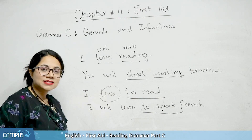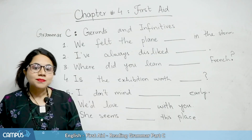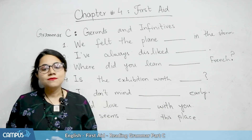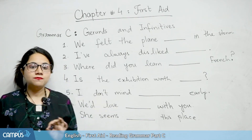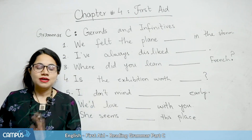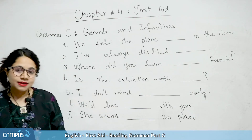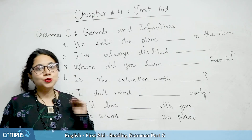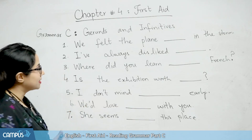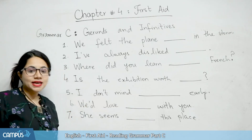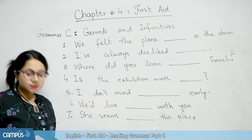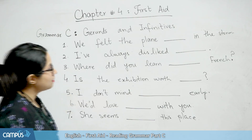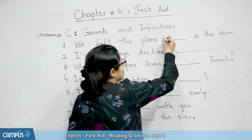We will start the exercise here. Complete the following sentences with infinitive or gerund, whichever is appropriate — you have to decide yourself. First sentence: 'We felt the plane blank in the storm.' The word given in brackets is 'shake,' so the answer is: 'We felt the plane shaking in the storm.'